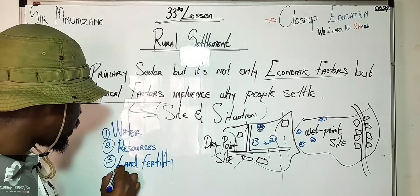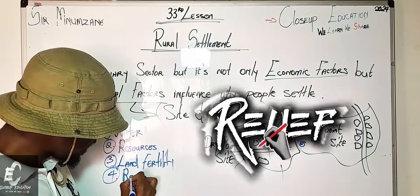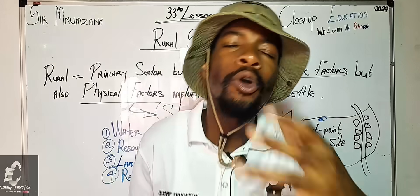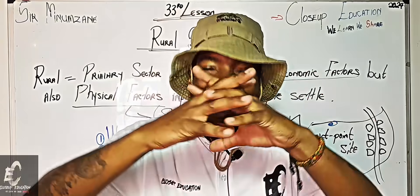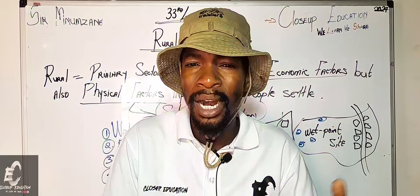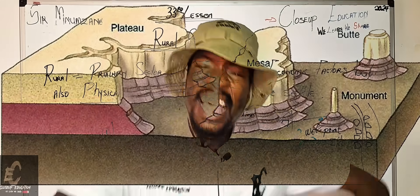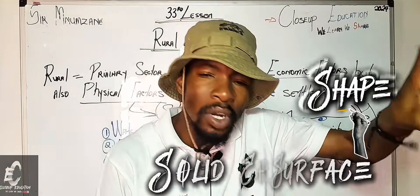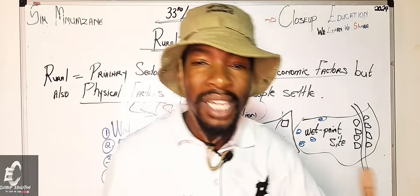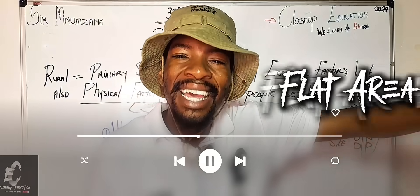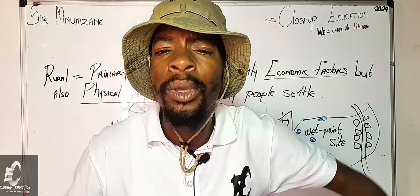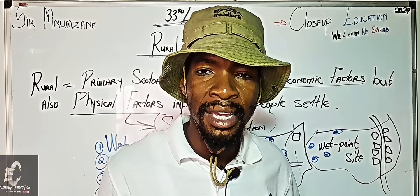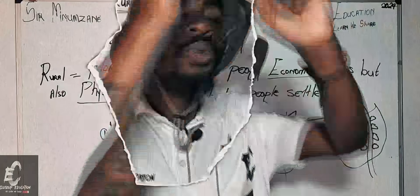The fourth factor is relief, and it goes hand in hand with land fertility. Relief is the shape of the solid surface of the earth — whether it's a mountain or flat ground. When looking for settlement, people need flat land. It must not be steep; it must be smooth or flat enough to build shelters. You cannot place a shelter on a very steep surface.